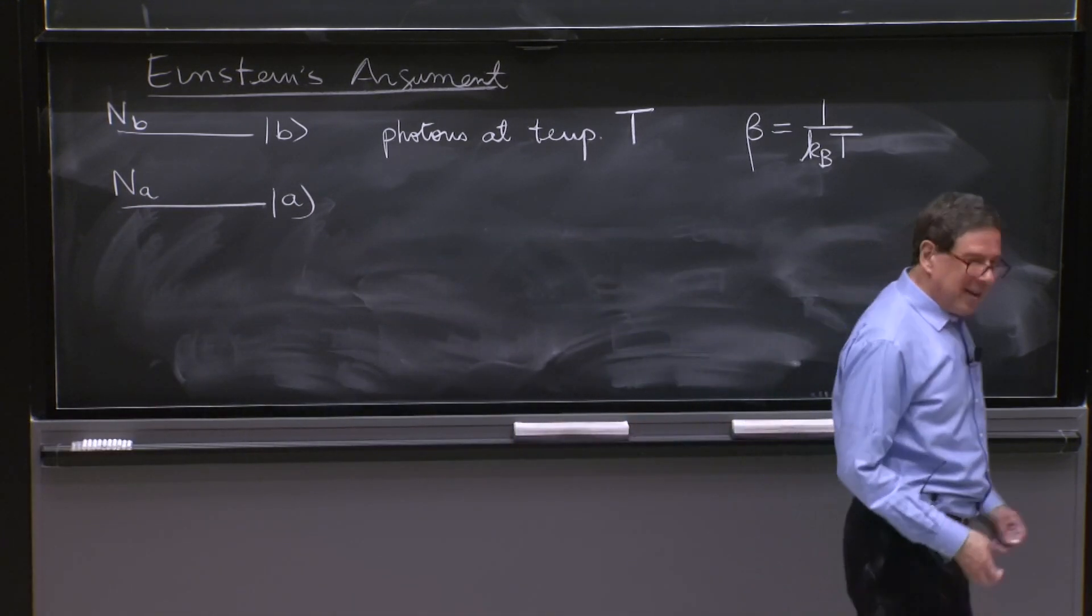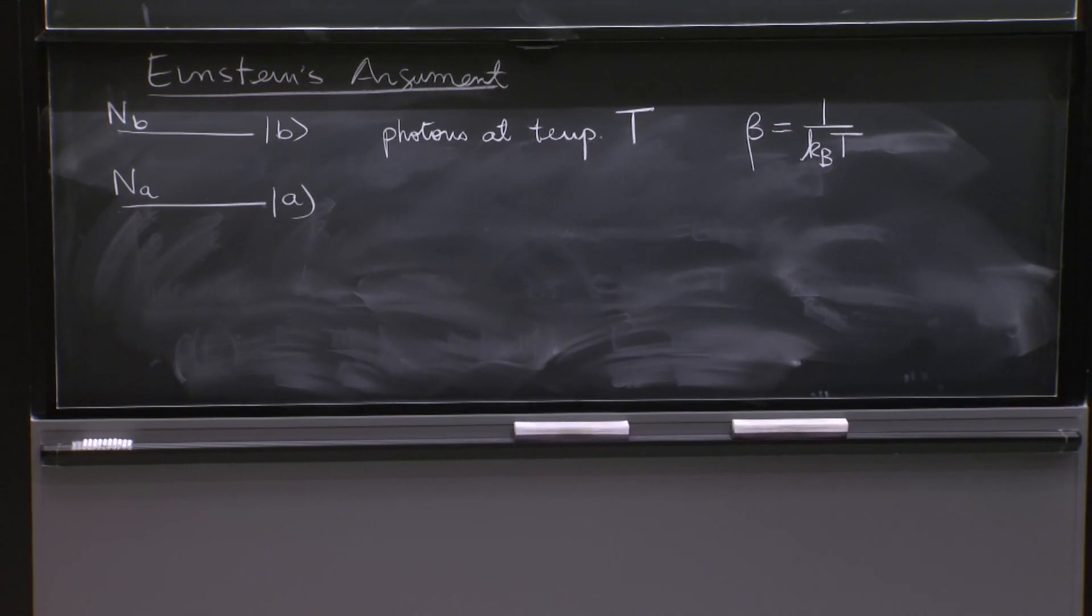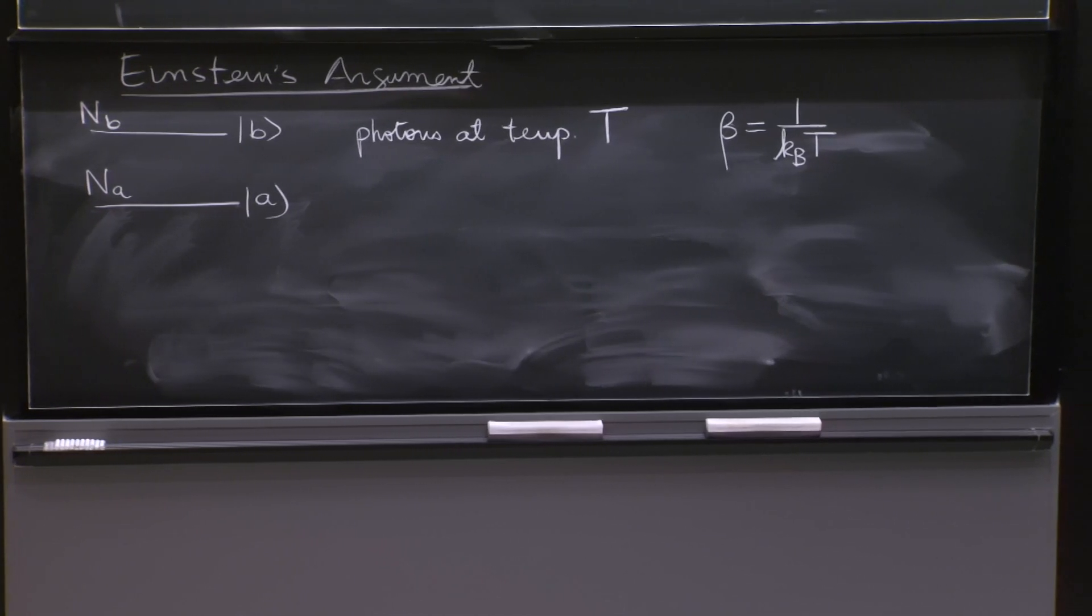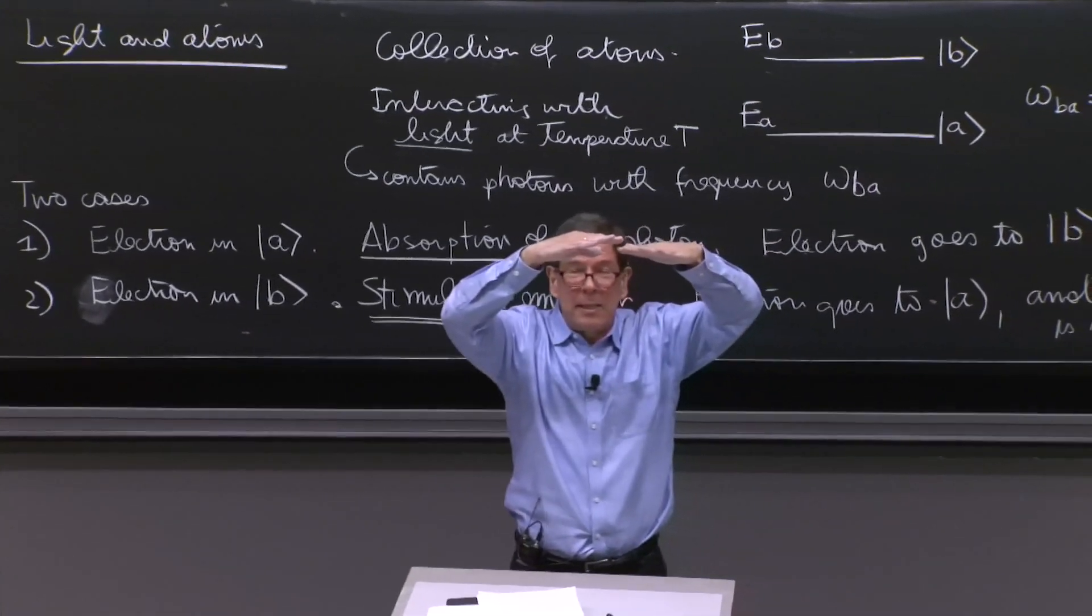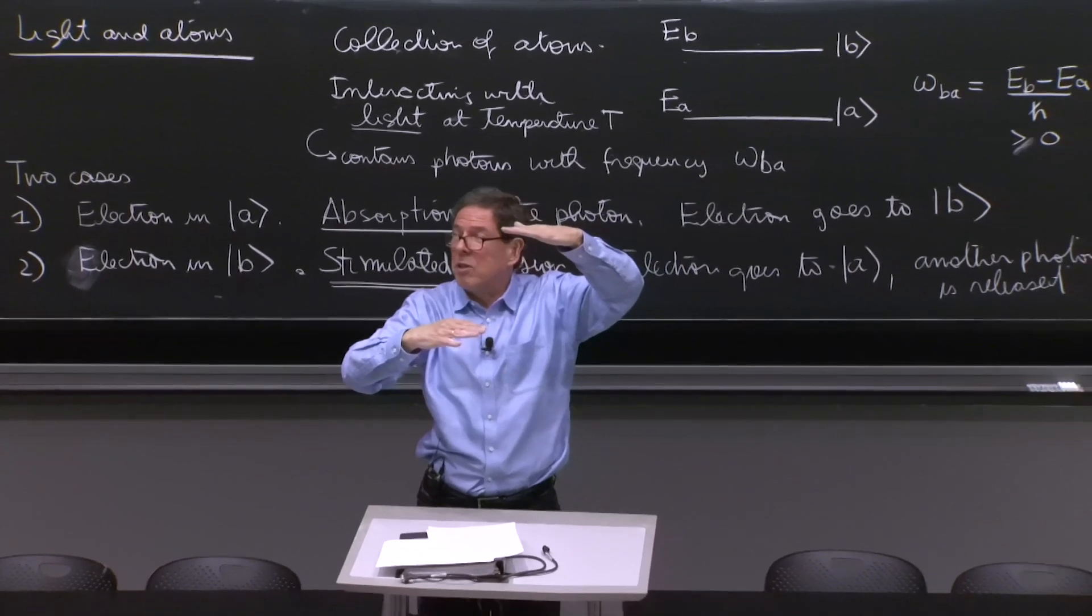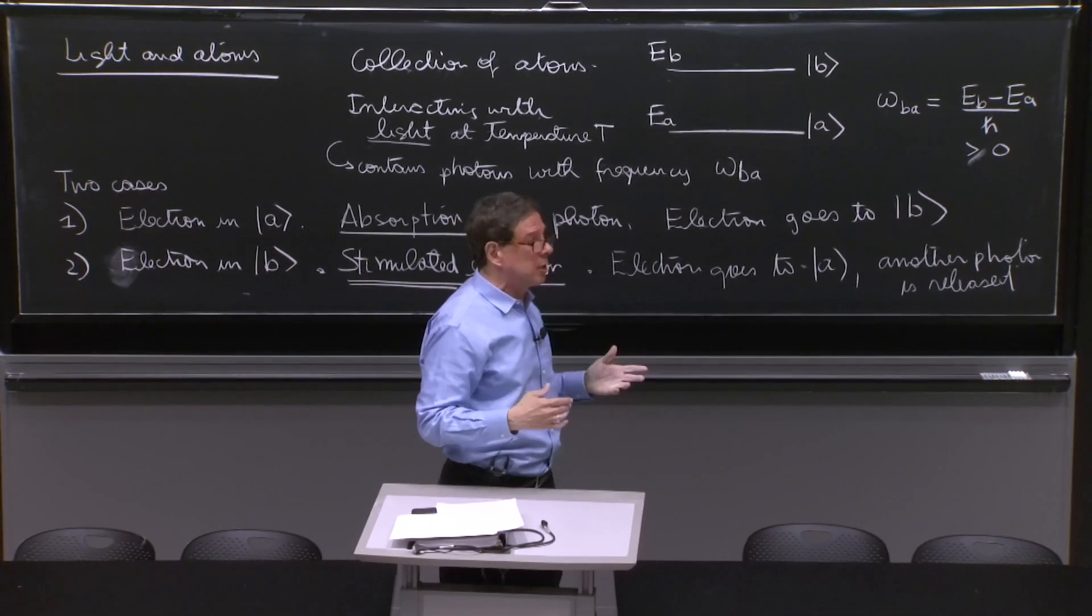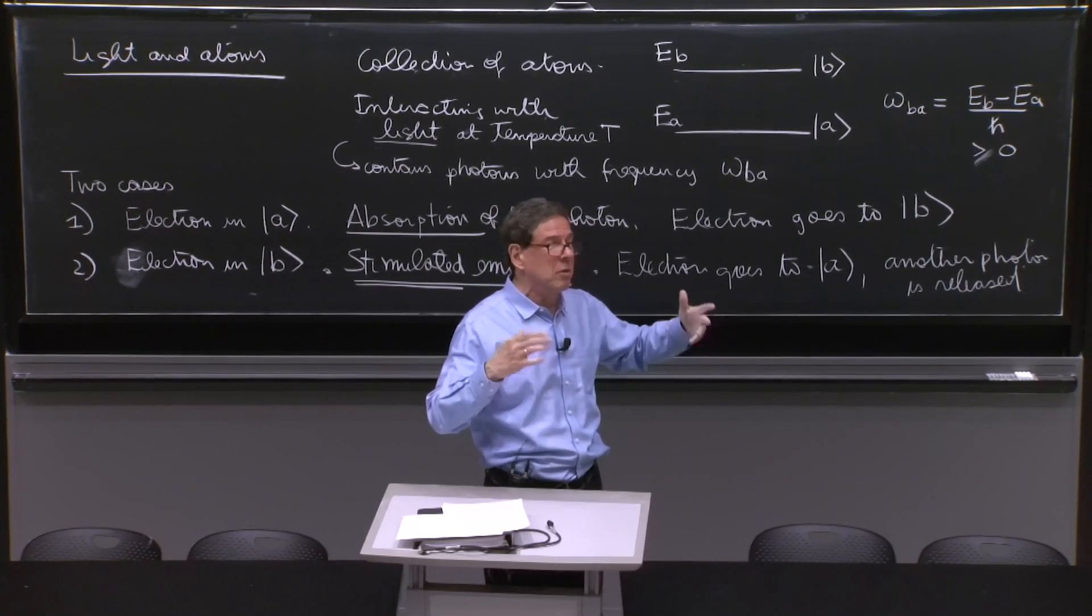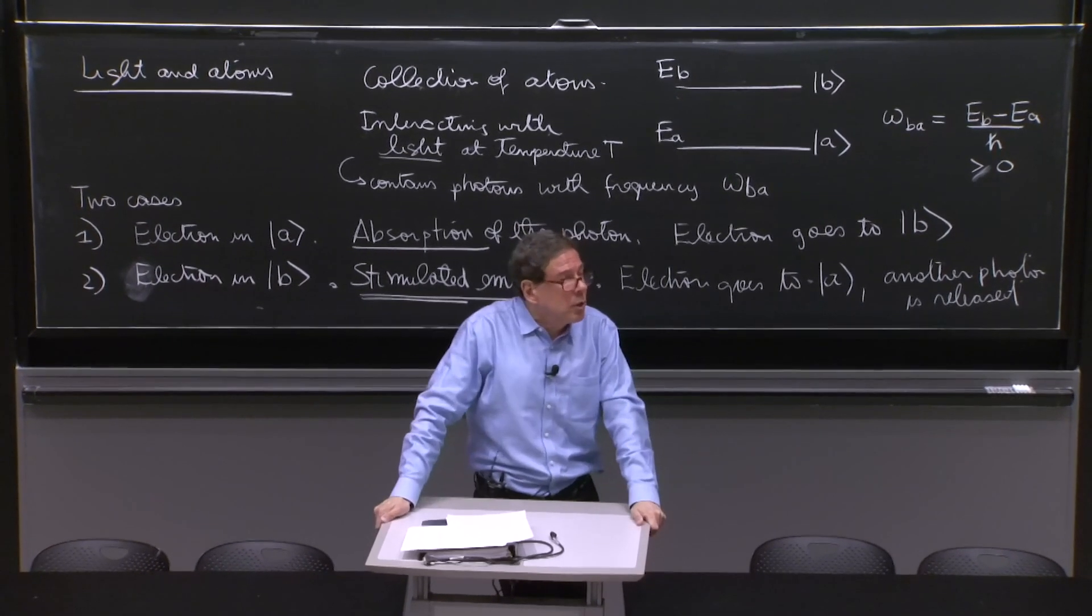So what's going to happen? If we came up from the intuition that we've built from 806, we would think there's going to be absorption process and stimulated emission process. And between the two, they're going to be able to reach equilibrium. We don't believe this is not a process that can equilibrate. So this would be our intuition.